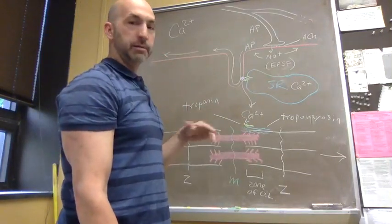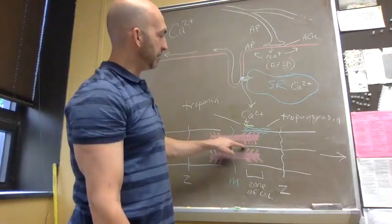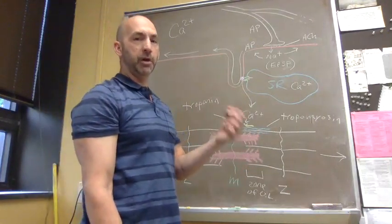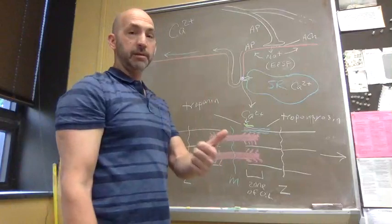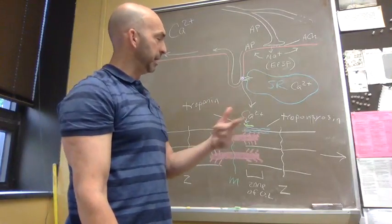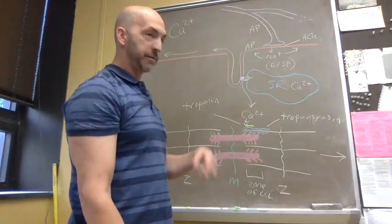Now, because of the presence of calcium, our myosin heads can bind, pull, release, bind, pull, release. They form cross-bridges which cycle, and as long as you have calcium and as long as you have ATP present, you will get this continual cycling of billions of these myosin heads forming cross-bridges.